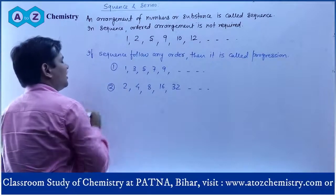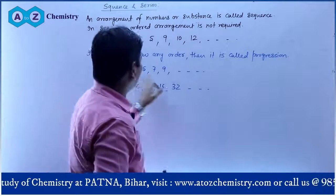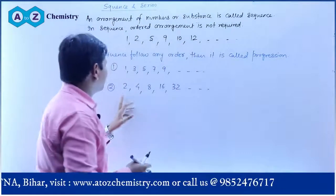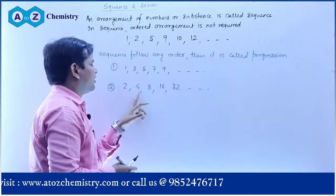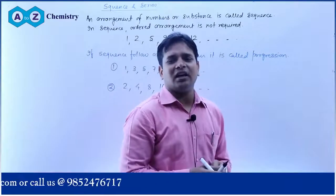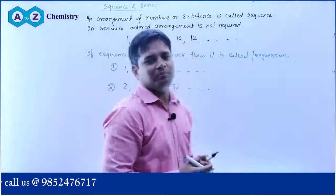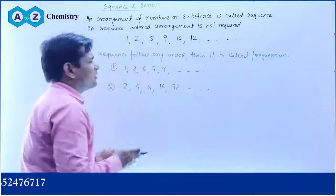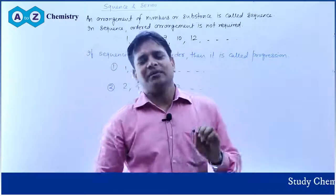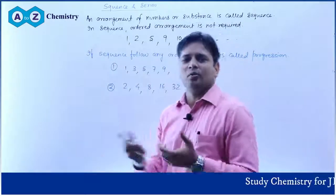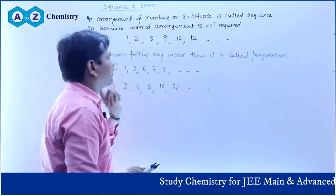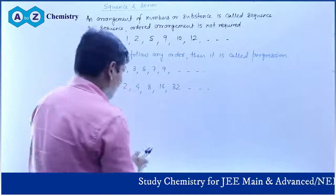In the first example, you can see the difference is 2 — it keeps increasing by 2 for each digit. In the second example, the ratio is 2 — after 2 comes 4, after 4 comes 8, after 8 comes 16 — each time multiplied by 2 from the previous digit. So you can see, a Progression is an ordered arrangement, whereas a sequence may or may not be ordered.